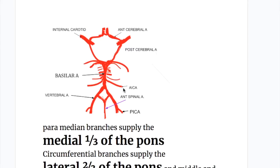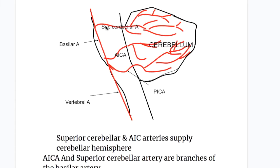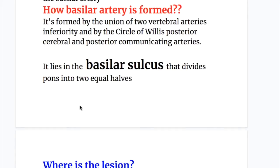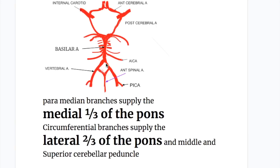So the anterior inferior cerebellar and superior cerebellar arteries arise from the basilar artery, while the posterior inferior cerebellar artery arises from the vertebral artery. The basilar artery is formed by the union of the two vertebral arteries, and on the other end it connects to the circle of Willis and the posterior communicating arteries.